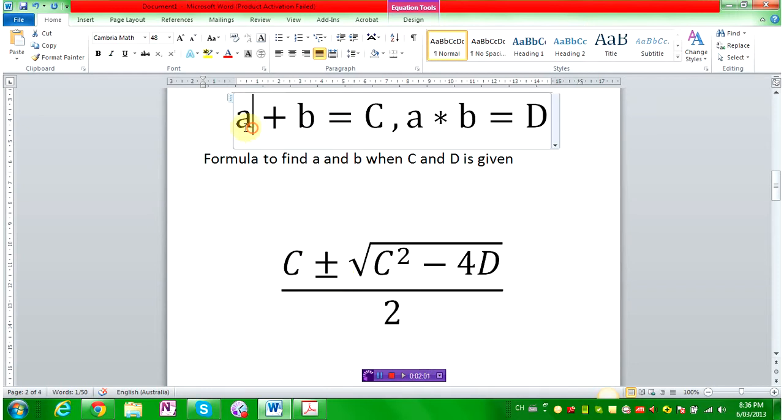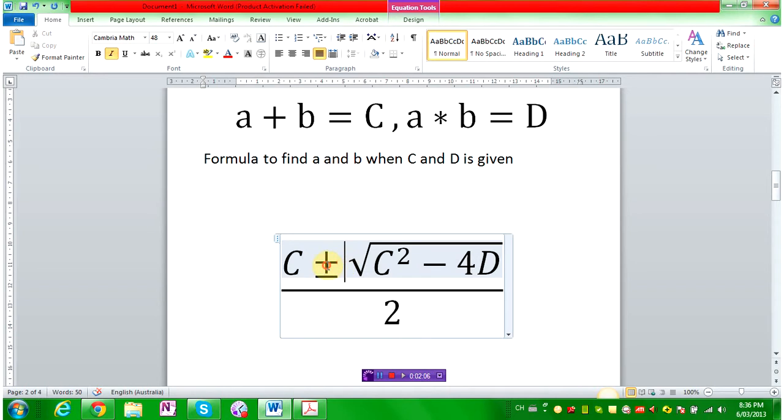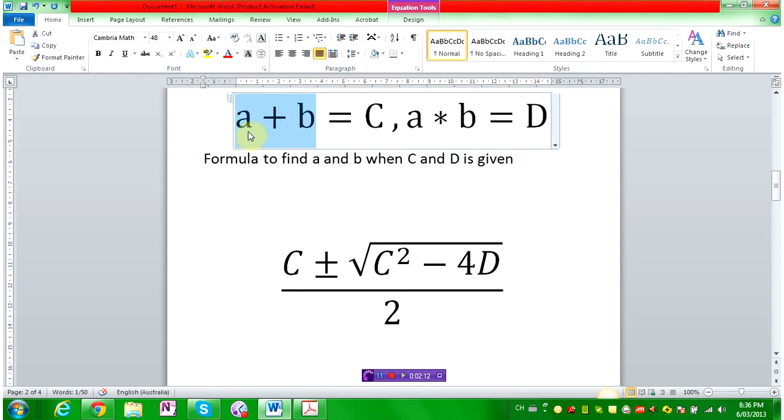And it'll give you either of these numbers. It does not matter which it gives you. If you type in minus and it gives you b, it does not matter. Next time it'll give you a. These two numbers does not have to be distinguished. So you get the point.